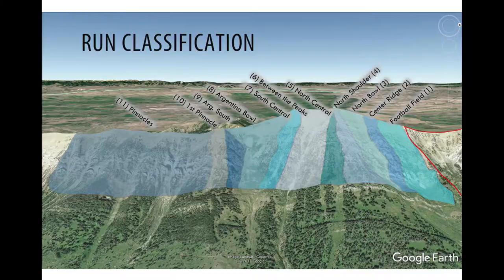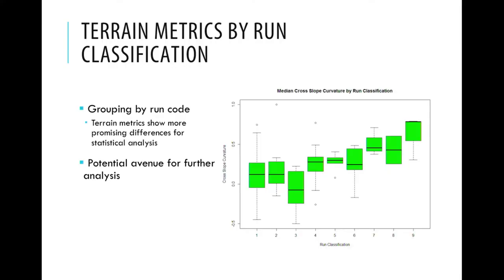Based on the fact that we couldn't separate people's tracks just by looking at terrain metrics pulled from each point, we're now going to use run codes to characterize the runs and see which runs people are selecting, rather than using statistics from each individual track point. This is a different way to approach the analysis — characterizing the consequences of each run rather than just the slope angle skied. Initially, we can see we do have much more difference in curvature when we group by run than when we pull out raw numbers from the total track.